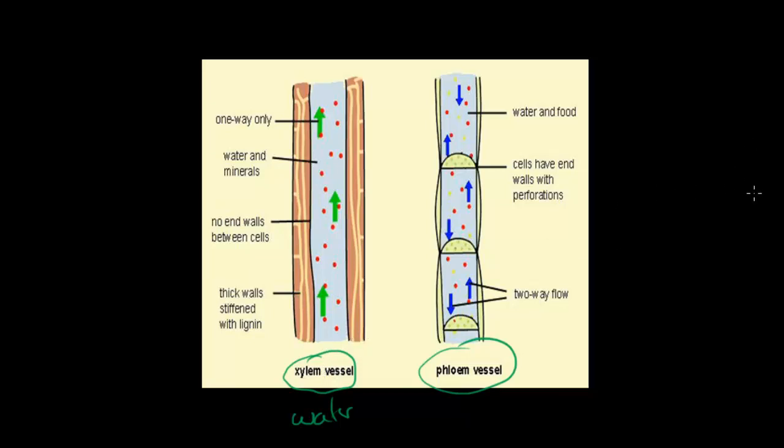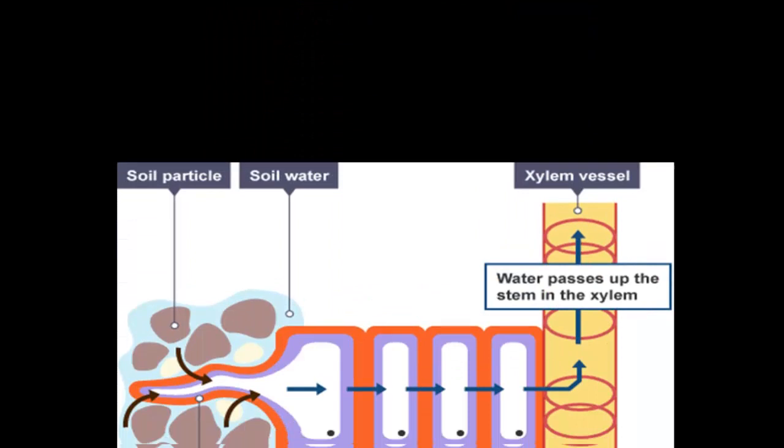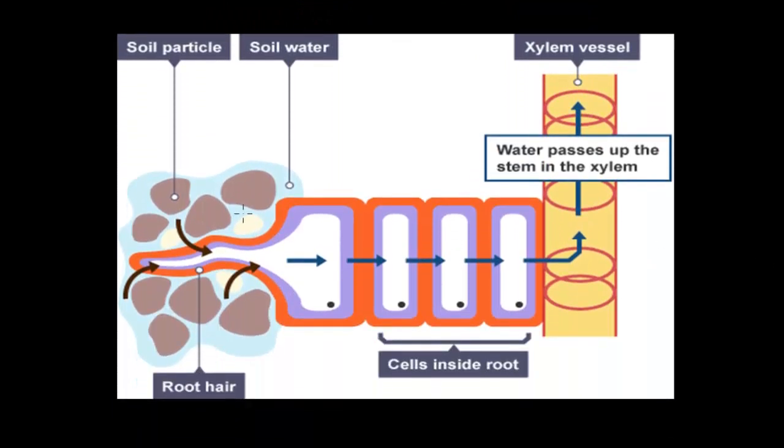But to see this, we need to talk about a process known as transpiration. So imagine this is the soil surrounding cells. The first cells that actually meet the water that can be found inside the soil are known as the root hair cells.